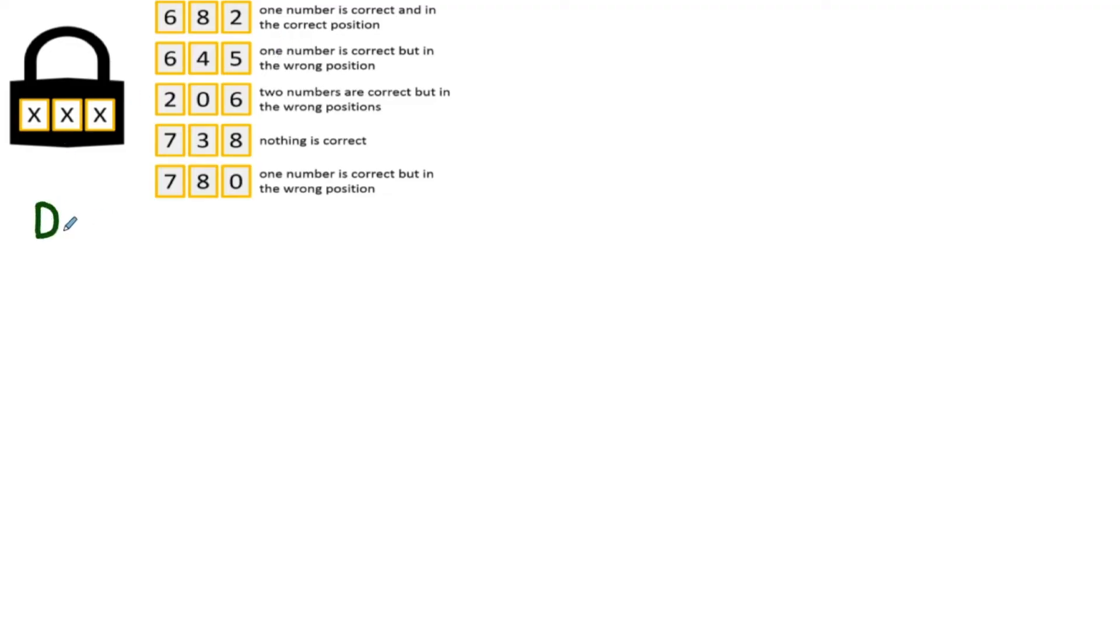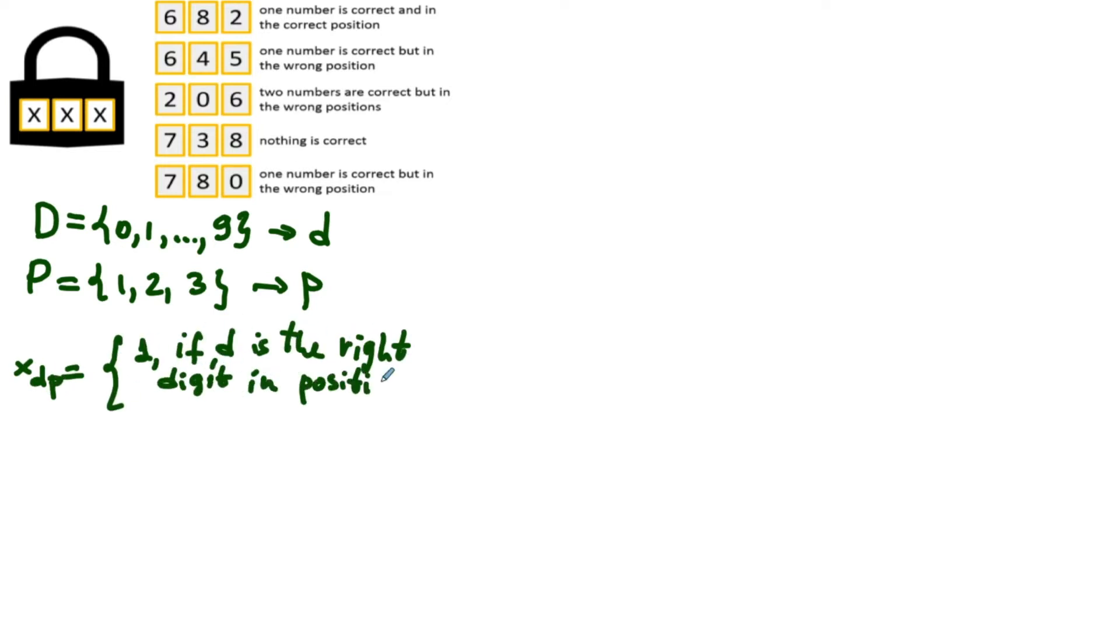Let's start by defining index sets for the digits and positions. How about using D capital for the set of digits and P capital for the set of positions? Sounds good. Then we can use lowercase d and p to denote the elements of these sets. Let's use variable x sub dp for each pair. Right. Then x sub dp will be equal to one if d is the correct digit in the position p, and to zero otherwise. For example, x sub zero three equal to one would mean that the third position is occupied by zero.